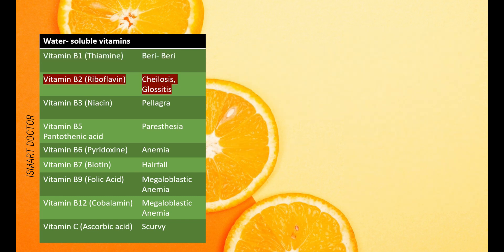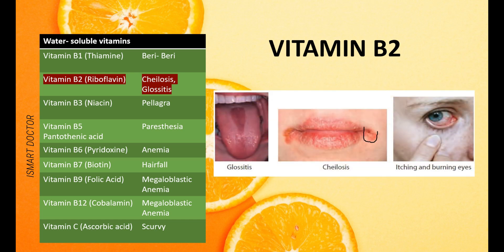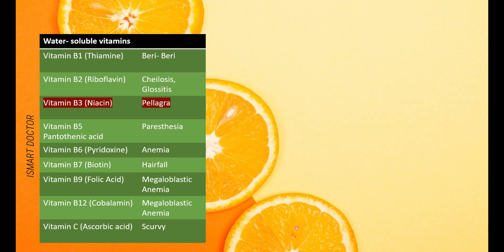B2, Riboflavin deficiency is called cheilosis and glossitis — tongue inflammation. It also causes itching and burning eyes. While weakness and depression are general daily symptoms, the typical hallmark symptoms for B2 deficiency are glossitis and cheilosis, along with itching and burning eyes.